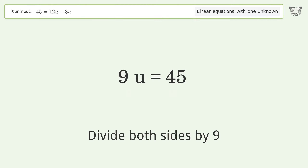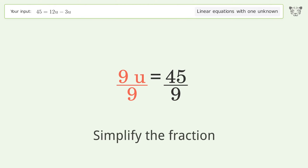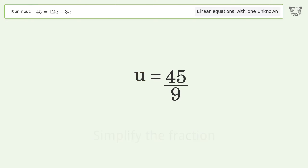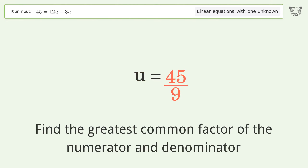Divide both sides by 9 and simplify the fraction. Find the greatest common factor of the numerator and denominator.